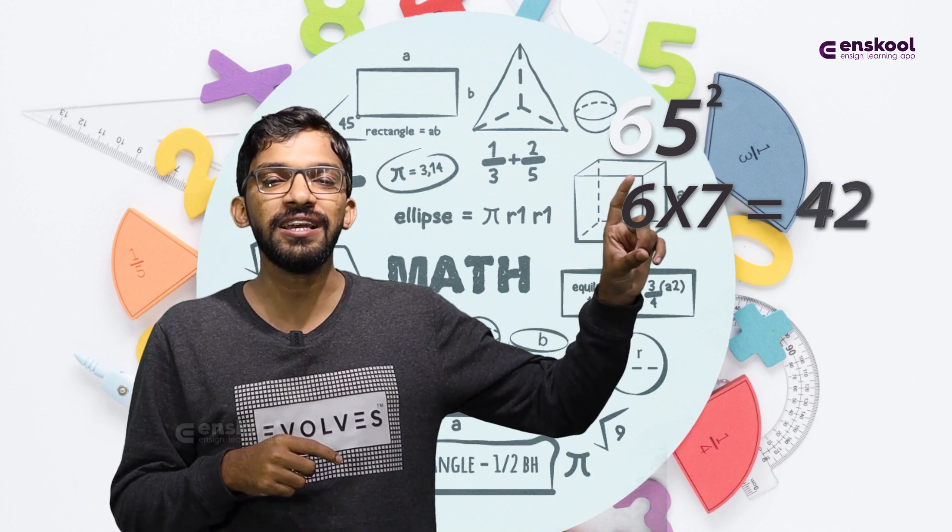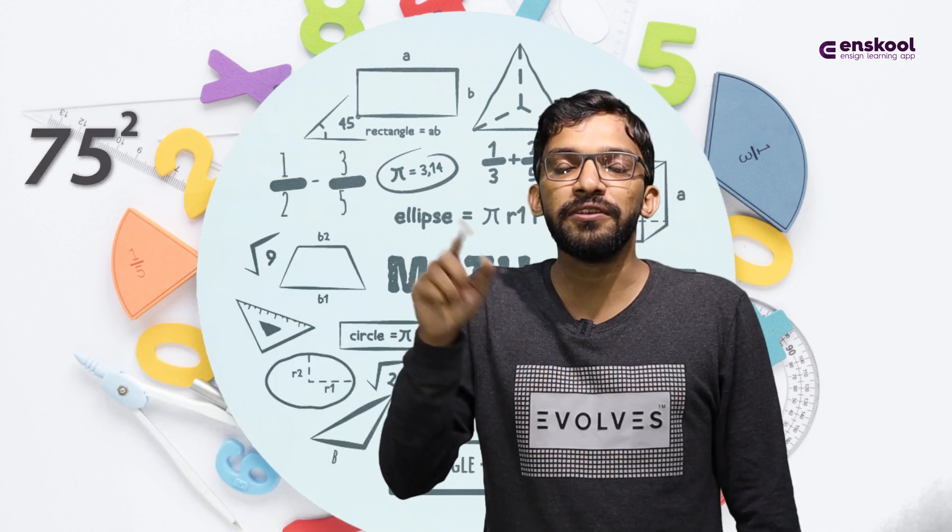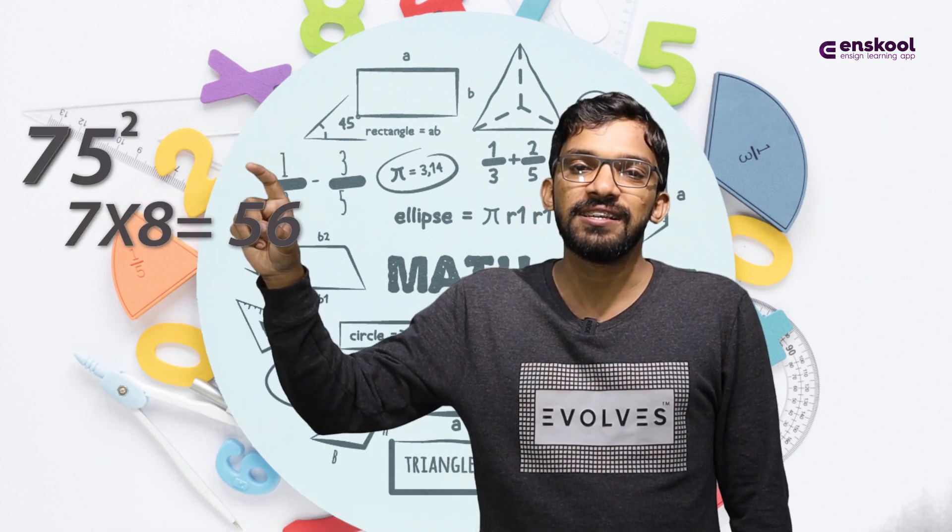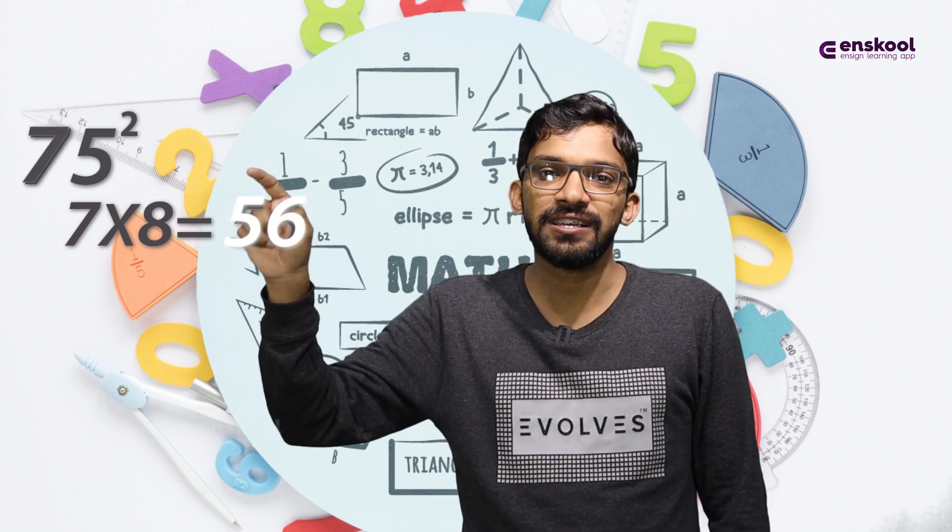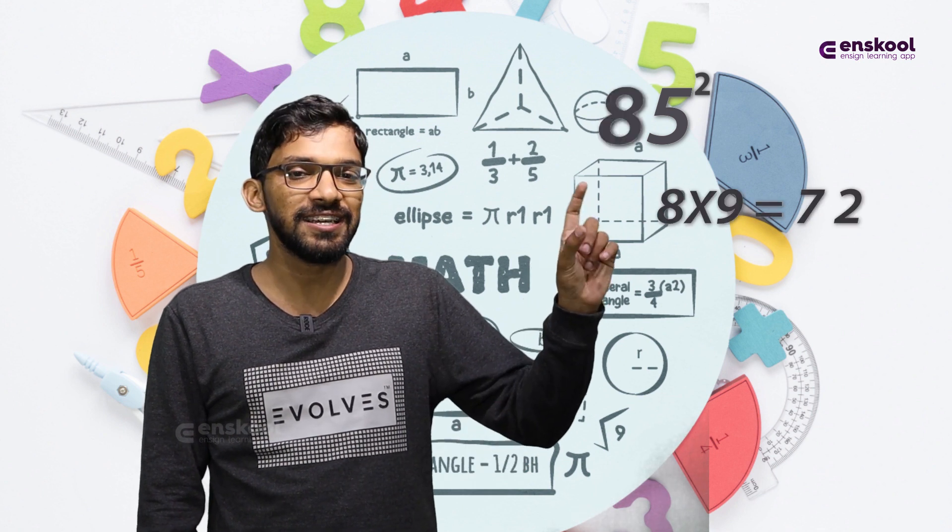75 squared: 7 times 8 is 56, so 5625. 85 squared: 8 times 9 is 72, so 7225.